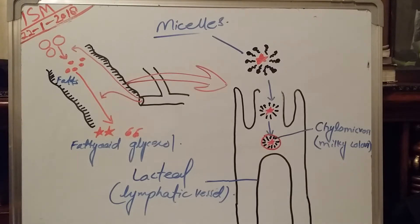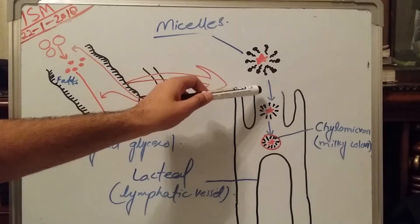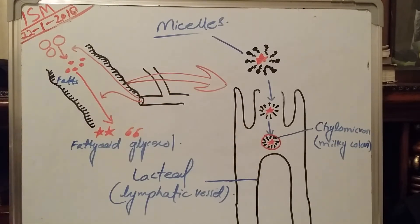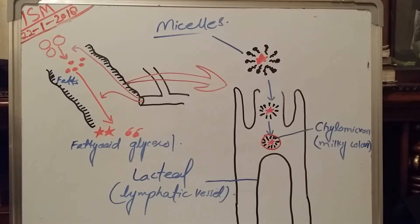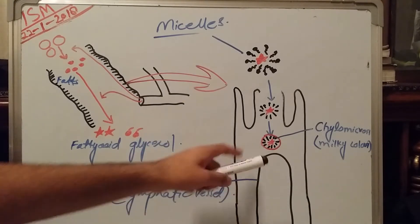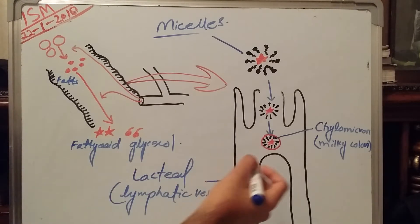So after the formation of micelles, the micelles under the process of endocytosis enter into the microvilli and move toward the body of the villi. Once they reach the body of the villi, they are covered by a protein layer and convert into chylomicrons. This chylomicron has a milky appearance. Once it is formed, it enters into the lacteal.